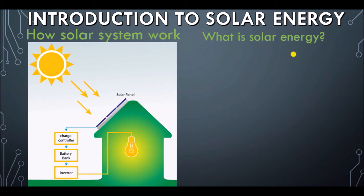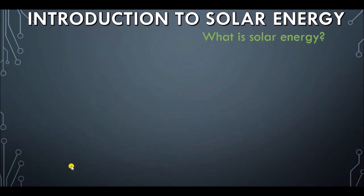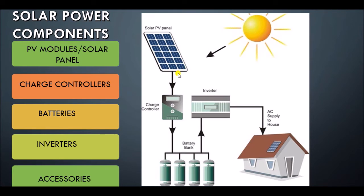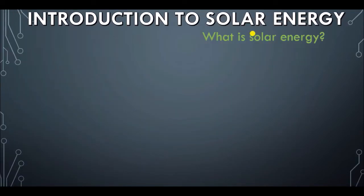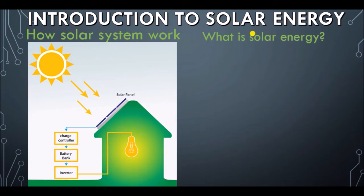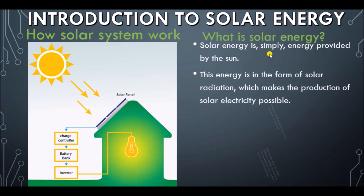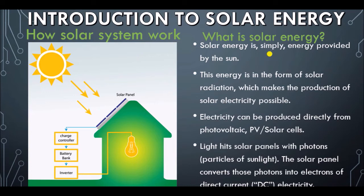Here is another illustration of the solar power system. The Sun is the source of energy — it heats the solar panel. Then the charge controller is connected to the solar panel, then connected to the battery bank, then connected to the inverter. So that is how it works in a simple sentence, but we are going to look at it deeper.